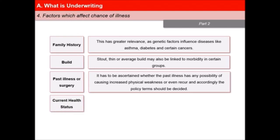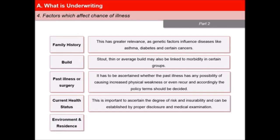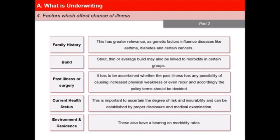8. Current health status: It is important to ascertain the degree of risk and insurability that can be established by proper disclosure and medical examination. 9. Environment and residence: These also have a bearing on morbidity rates.